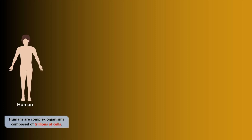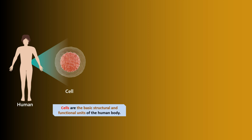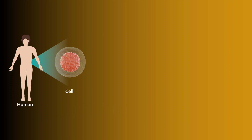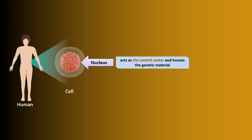Humans are complex organisms composed of billions of cells. These cells are the basic structural and functional units of the human body. Within each cell is a nucleus, which acts as the control center and houses the genetic material.